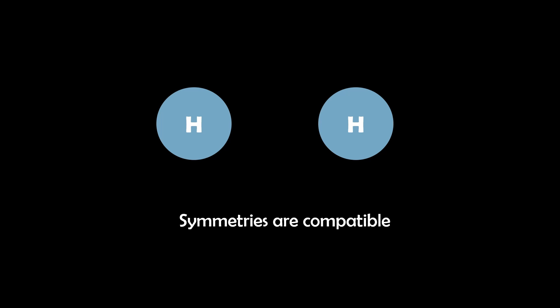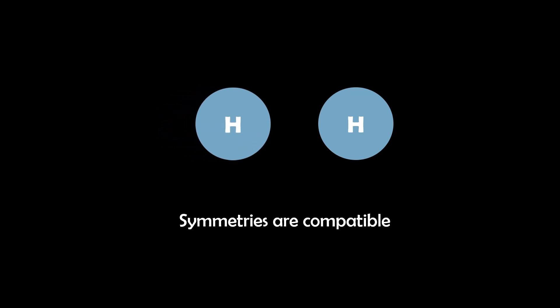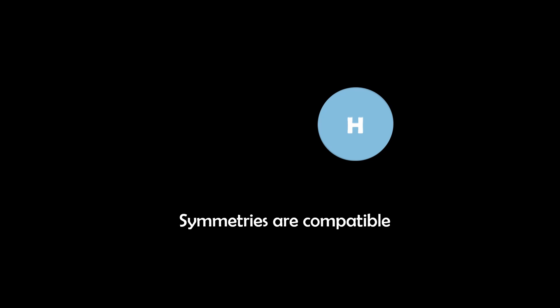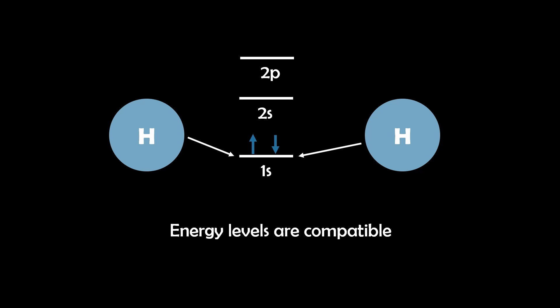So in essence, these four quantum numbers form a framework for understanding the states of electrons in all atoms. This understanding is important in chemistry as it helps predict how electrons change states and interact, which in turn influences molecular bonding and properties. For instance, we can predict that two hydrogen atoms will bond due to the compatible orbital symmetries and energy levels.